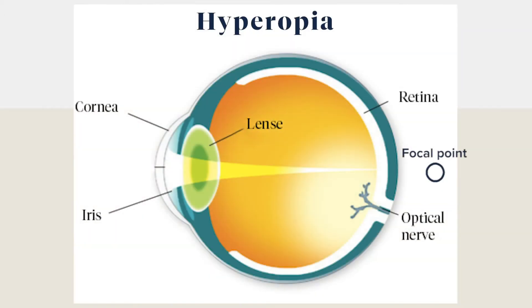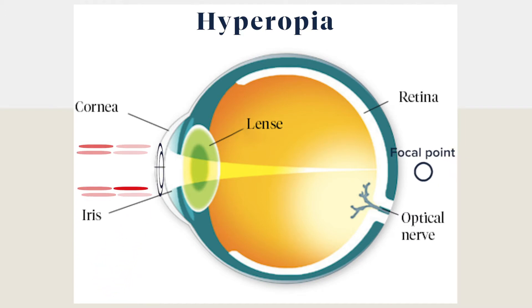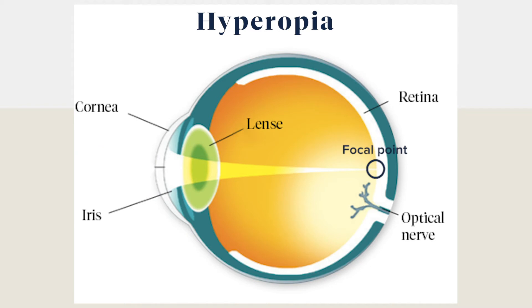For farsightedness — hyperopia — treatment will be the opposite: making the cornea rounder. To get the desired effect, the pattern of the ablation will be more like a trough dug around the cornea. However, it is important to note that latent hyperopia may emerge over the years, especially closer to the age of presbyopia.